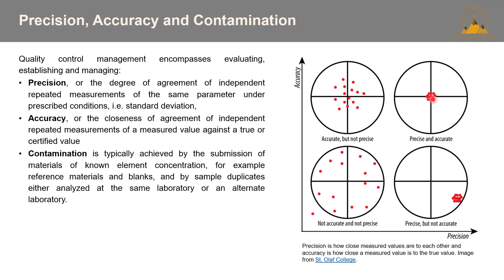It's important to keep these concepts in mind when analyzing or reporting QAQC data. Contamination is equally important — it's typically assessed by submission of materials of known element concentration, such as reference materials and blanks, and by sample duplicates analyzed at the same or an alternate laboratory. For example, if you're working in a low-sulfidation epithermal silver project and getting high silver values, but your blank samples are also reporting high silver, there's likely a contamination issue at the lab that needs to be addressed.